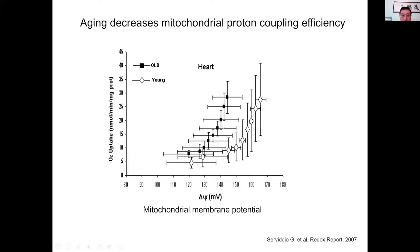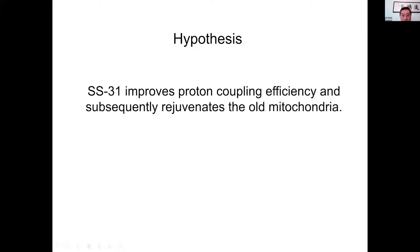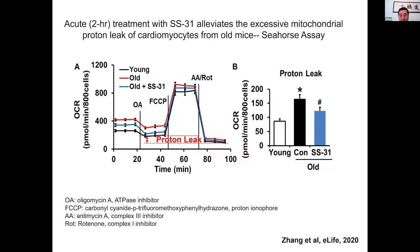We hypothesized whether SS31 can improve proton coupling efficiency and thereby rejuvenate old mitochondria. To test this, we isolated cardiomyocytes and performed the Seahorse mitochondrial stress assay to evaluate proton leak. We found old mitochondria have more proton leak, and SS31 acute treatment — two hours on isolated cardiomyocytes — can reverse this increased proton leak.